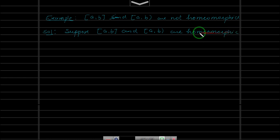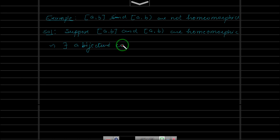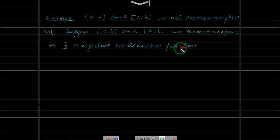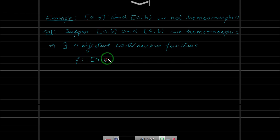Since they are homeomorphic, this implies there exists a bijective continuous function whose inverse is also continuous. So there is a bijective continuous function f from [a,b] to [a,b).